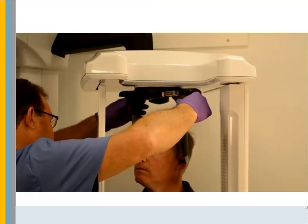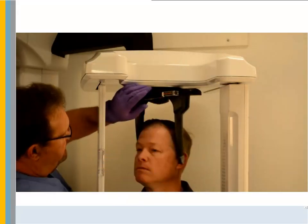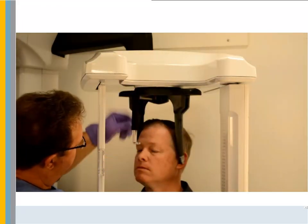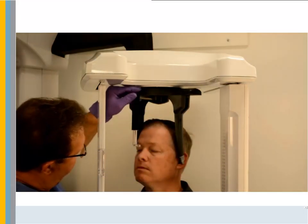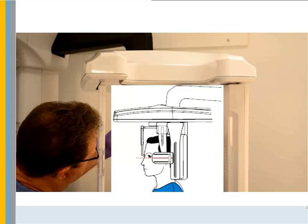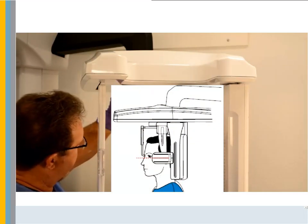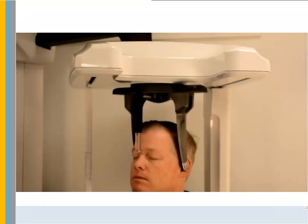After the unit is at the correct height, ask the patient to enter the unit and slowly close the head clamps. Align the Nasion bar and align the patient's head on the Frankfurt plane. Take the scan.